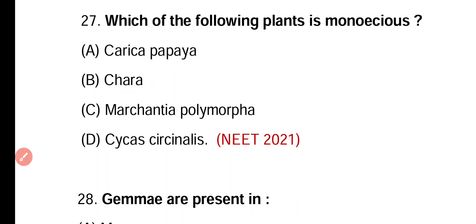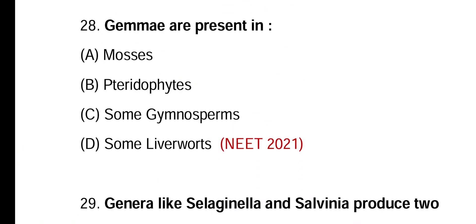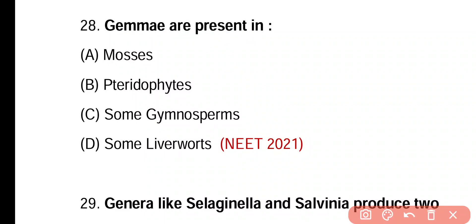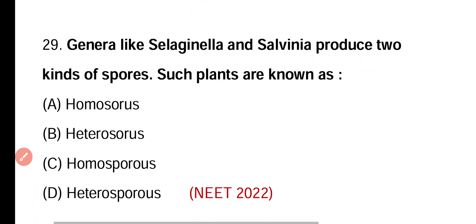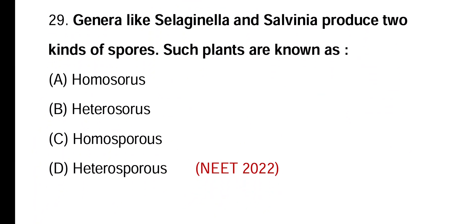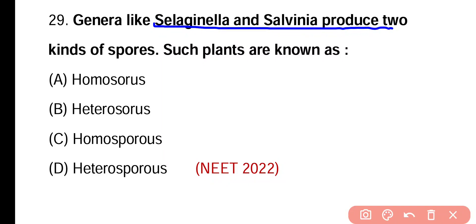Question 28. Gemmae are present in: mosses, pteridophytes, some gymnosperms, or some liverworts. Correct answer is option D — gemmae are means of asexual reproduction and they are present in some liverworts such as Marchantia.